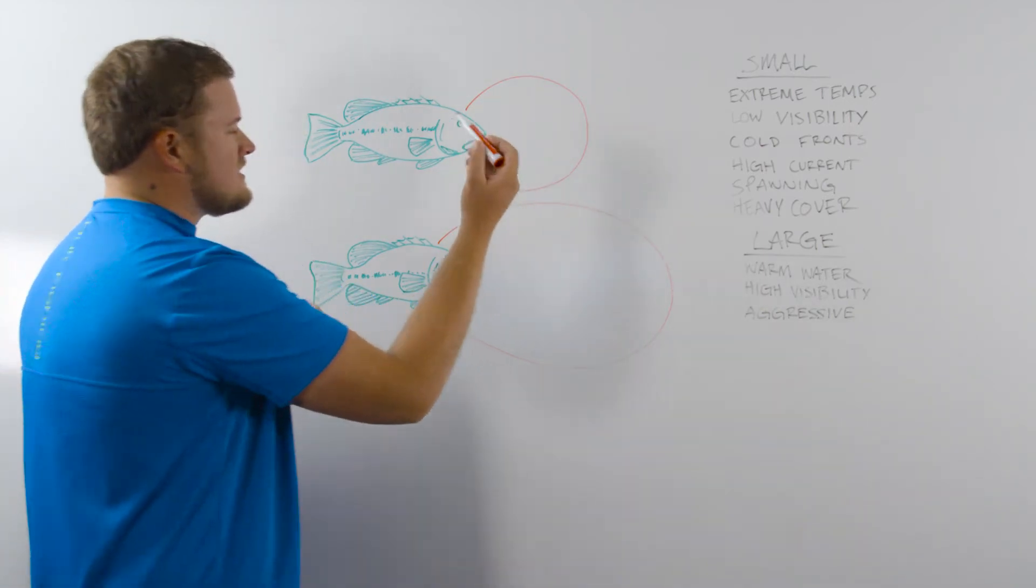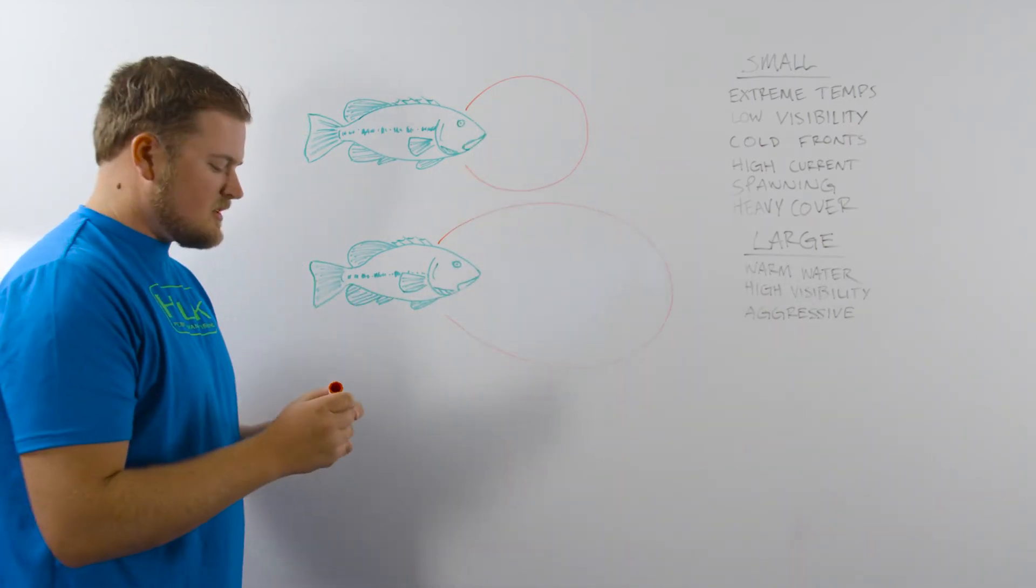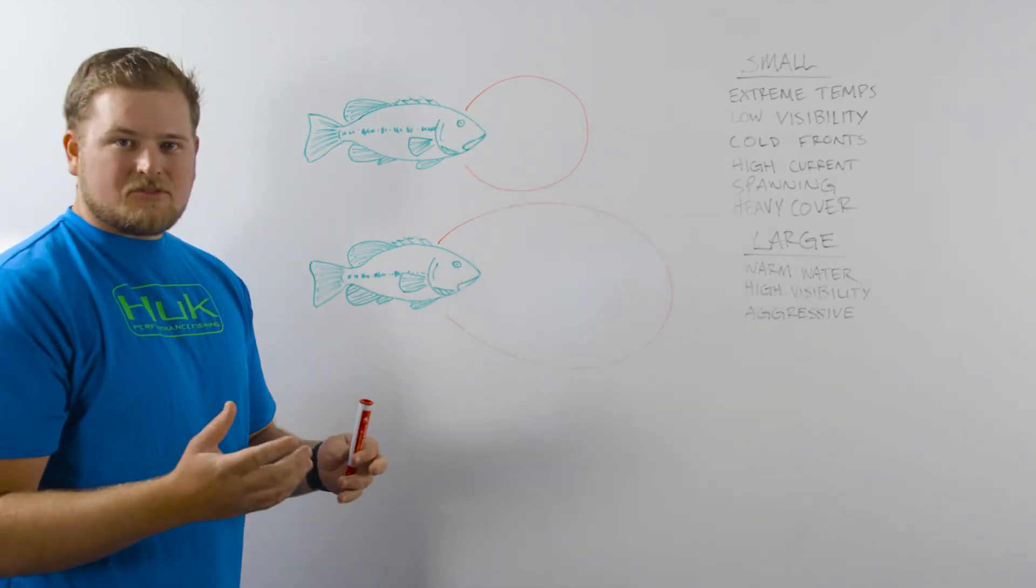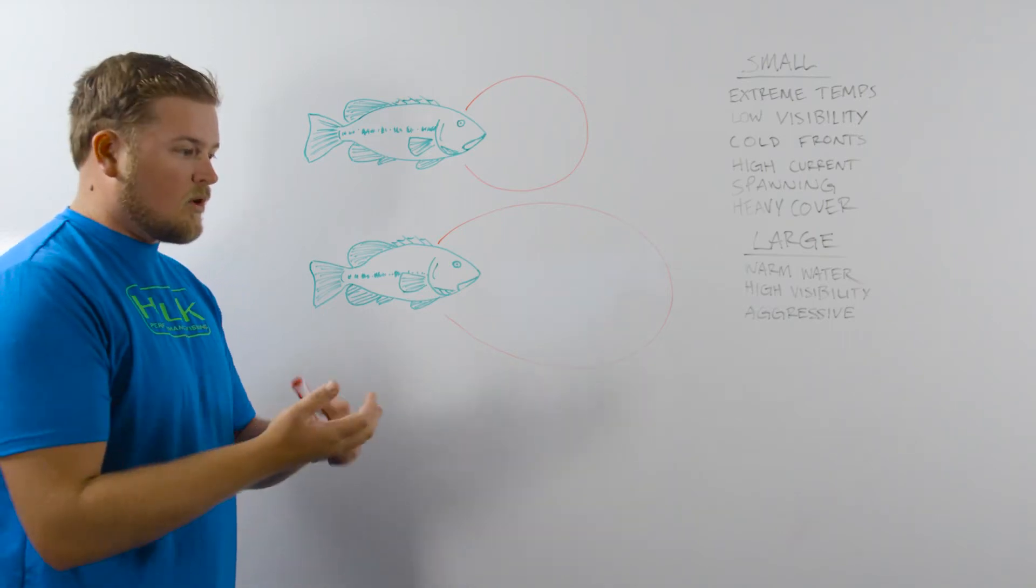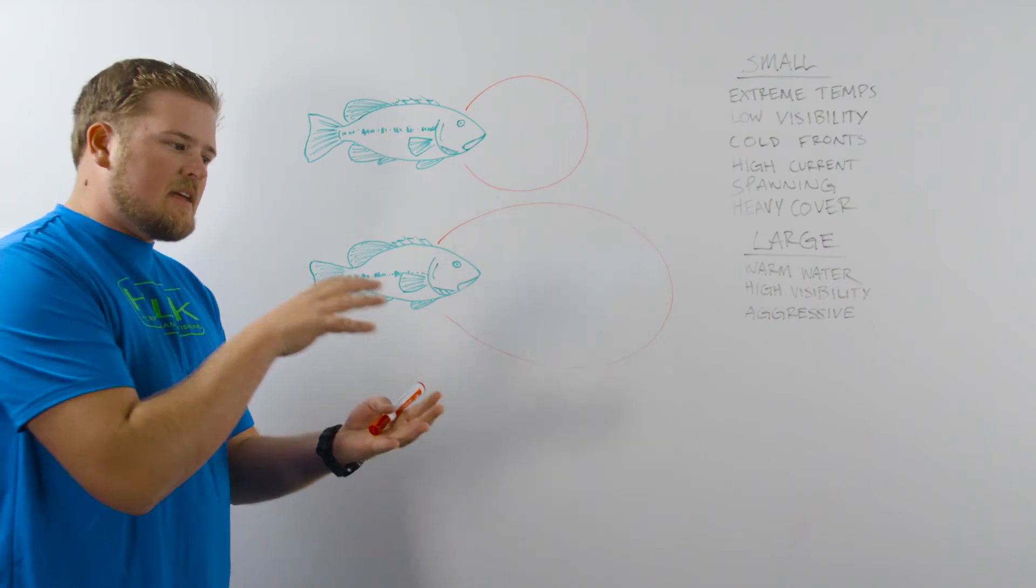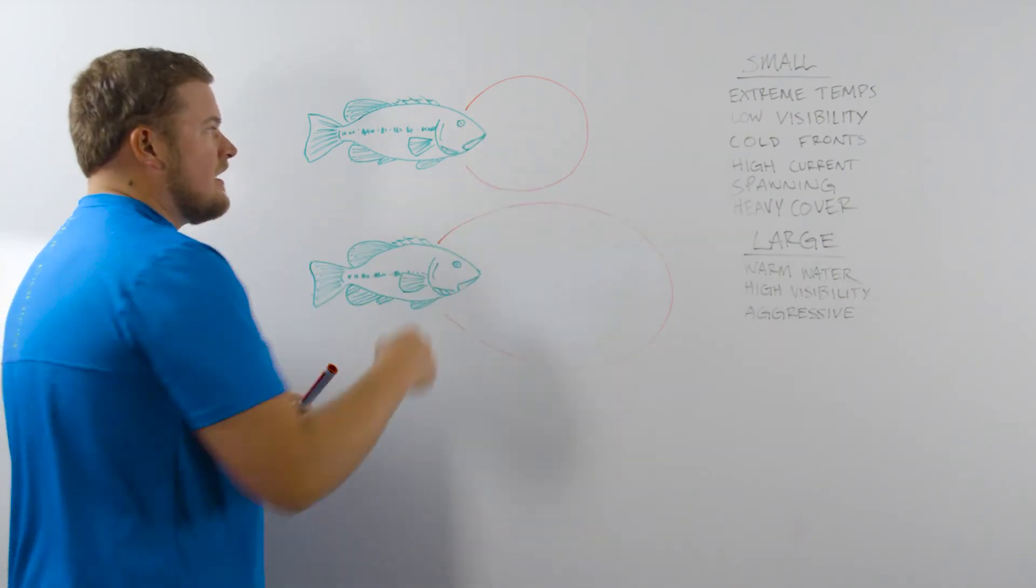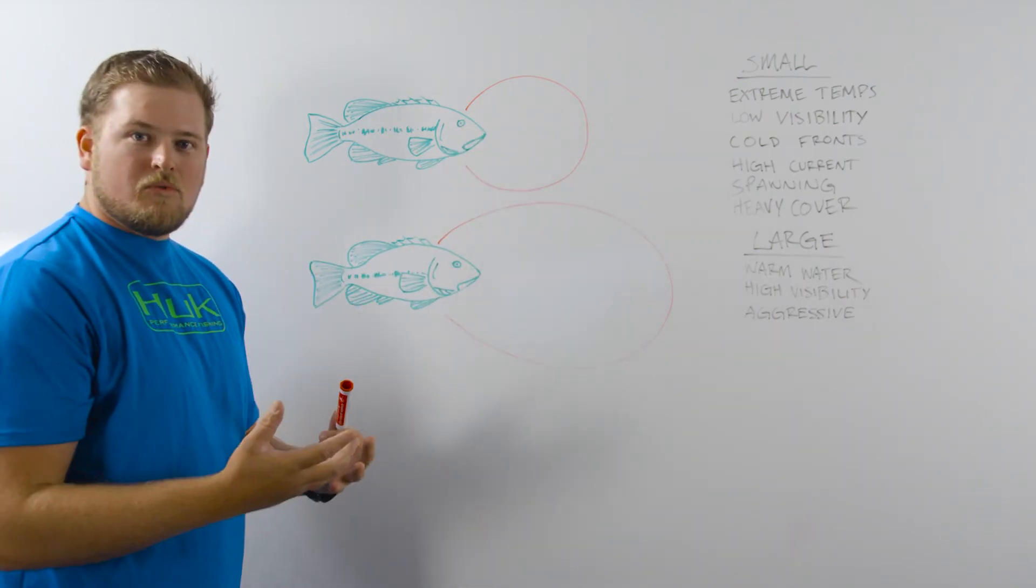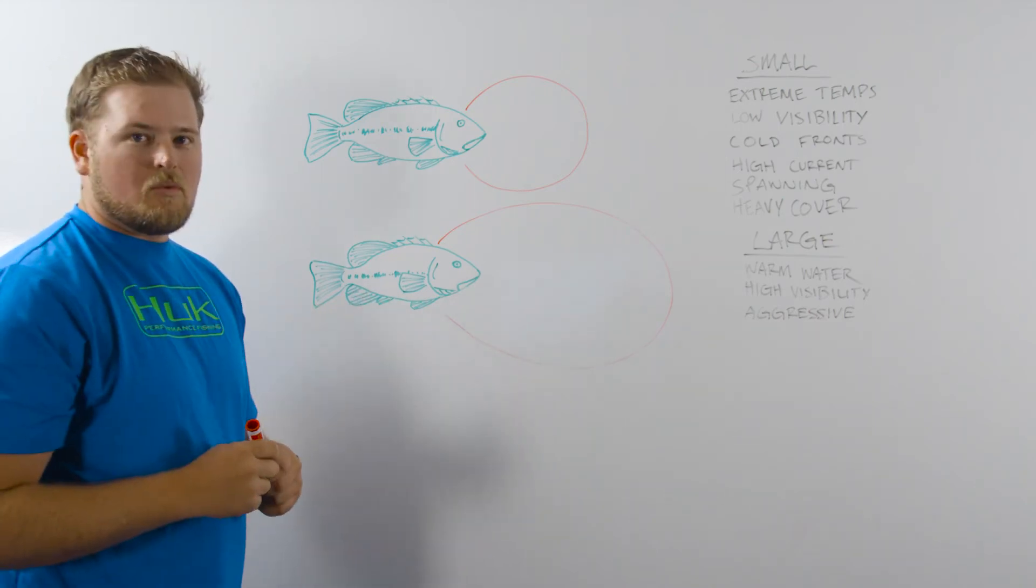Now if you have a strike zone that's small, you want to make sure that you're using baits that stay in that strike zone longer. Worms, wacky rigs, anything that can stay in that strike zone, in that area that the fish is willing to move, those are the baits that you're going to want to use.